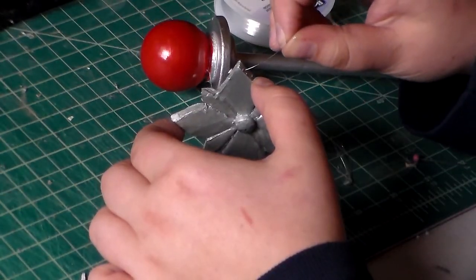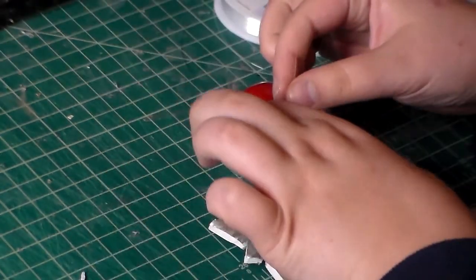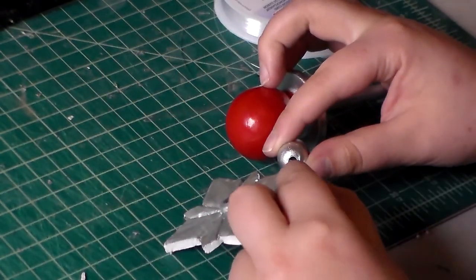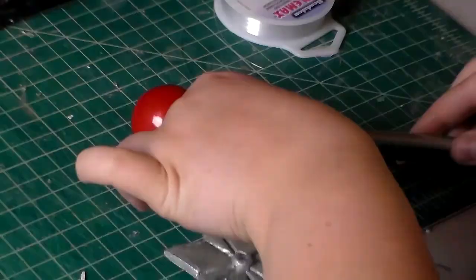Then, take a pin and poke it through the corner of your snowflake, and thread the string through and tie the snowflake to the second bead. Then you're done!